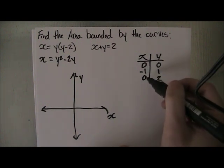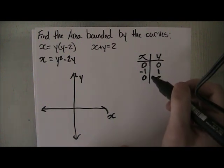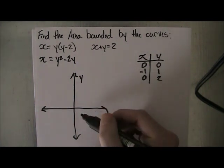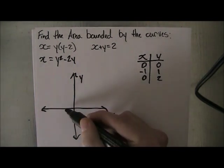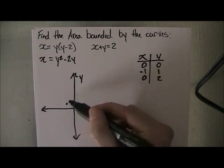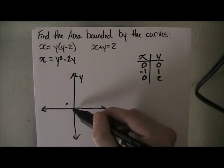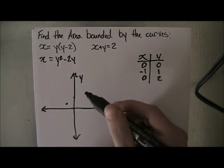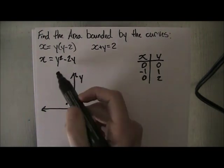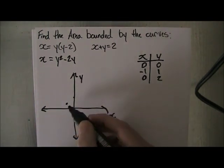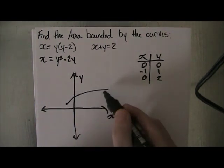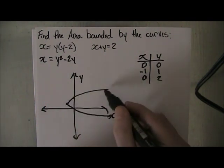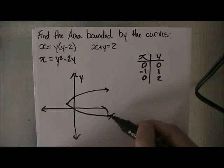We actually get the same x value again. Because of that, we can trace out these points. We have (0, 0) right here, then x equals minus 1 when y equals 1, and x equals 0 again when y equals 2. Because it's a parabola opening to the right since y squared is positive, our parabola is going to look something like this. So this is our parabola.